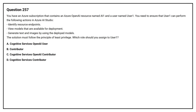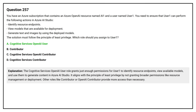Option B: Contributor. Option C: Cognitive Services OpenAI Contributor. The correct answer is Option A, Cognitive Services OpenAI User. This role grants just enough permissions for User1 to identify resource endpoints, view available models, and use them to generate content in Azure AI Studio. It aligns with the principle of least privilege by not granting broader permissions like resource management or deployment. Other roles like Contributor or OpenAI Contributor provide more access than necessary.